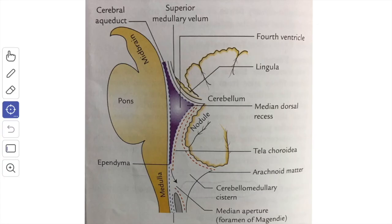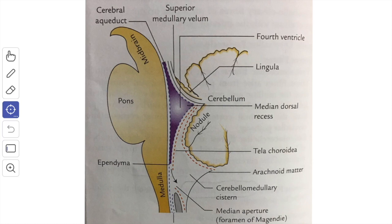Next, we'll see the tela choroidea of the fourth ventricle. The tela choroidea is a double-layer fold of pia mater between the inferior vermis of the cerebellum and the lower part of the roof of the fourth ventricle. Its dorsal layer lines the inferior vermis, reaches the nodule, and gets reflected upon itself to form its ventral layer. When traced laterally, the dorsal layer is continuous with the pia mater covering the cerebellar hemisphere. The ventral layer lies on the roof of the lower part of the fourth ventricle and is continuous with the pia mater covering the dorsal surface of the medulla oblongata.